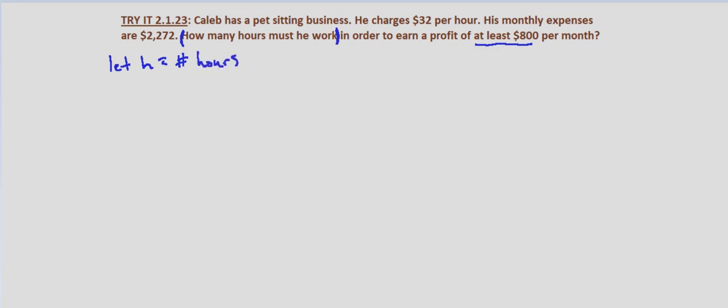Now let's put this in terms of what we're given. He makes $32 per hour, so 32 times the number of hours worked minus his expenses is at least the amount of profit Caleb desires to make, which is $800.